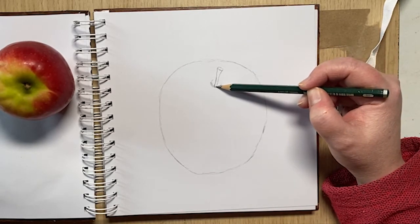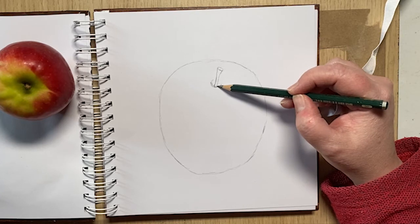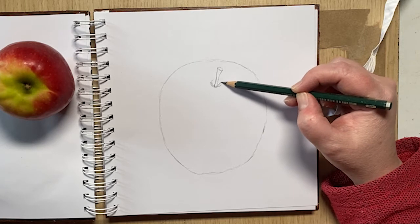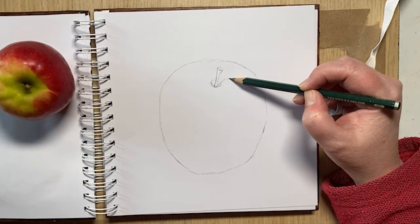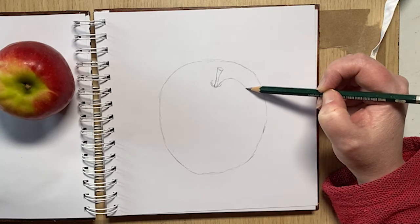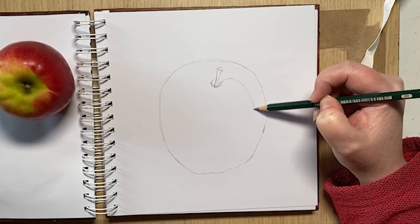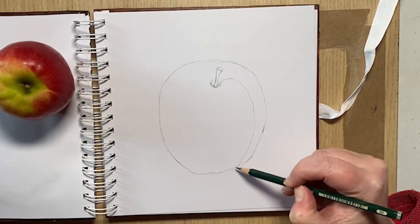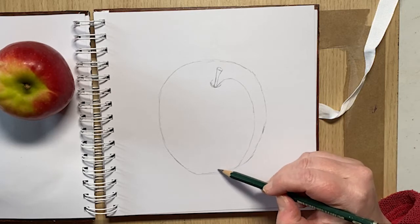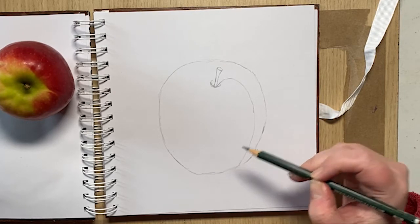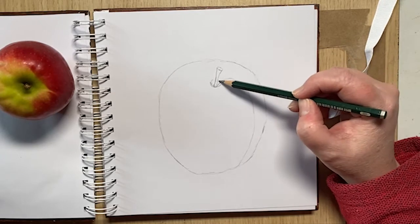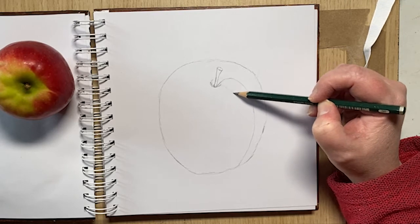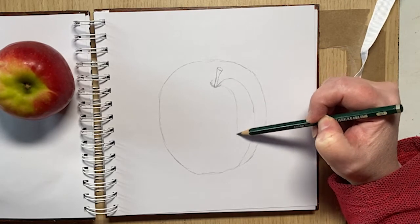If you follow one of those imaginary contour lines, it sort of comes up from the middle and it comes around, and then it kind of comes down, and then it'll come back up to where the core is inside the apple, but you can't see that. So if you just do yourself some guidelines from the middle, go round and down.